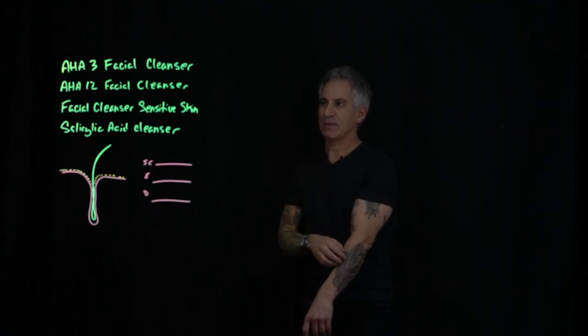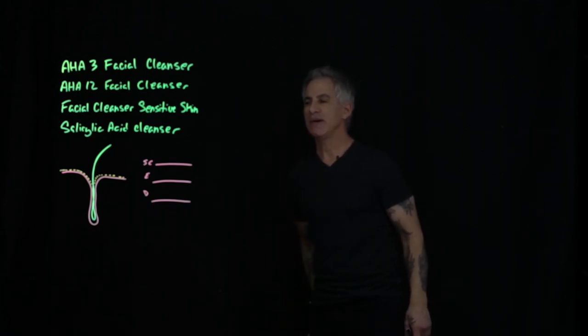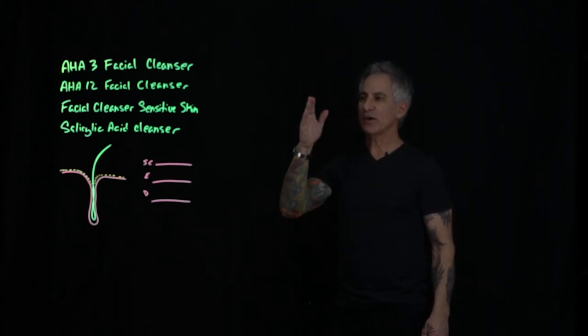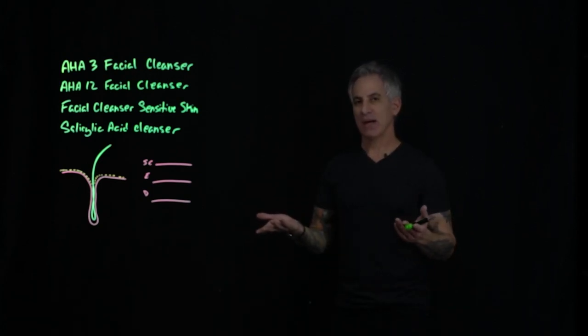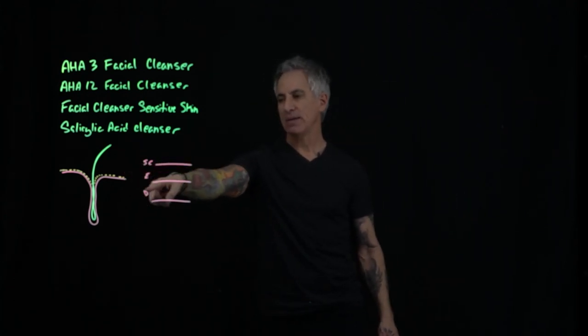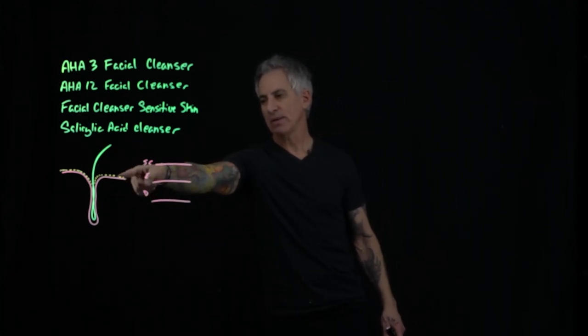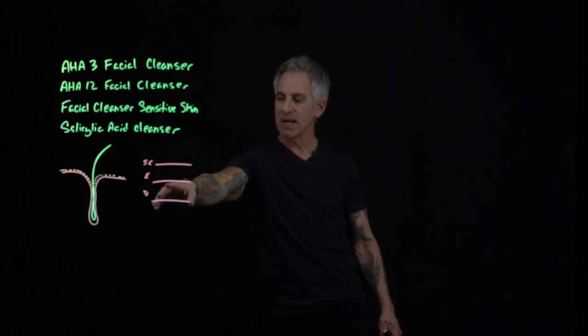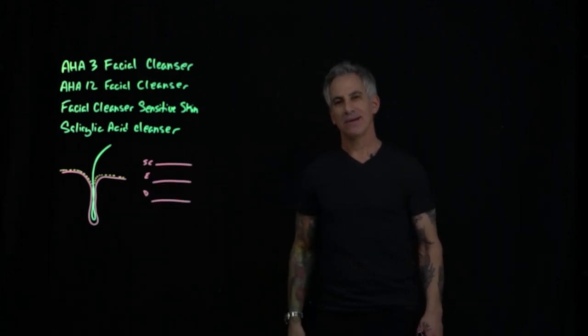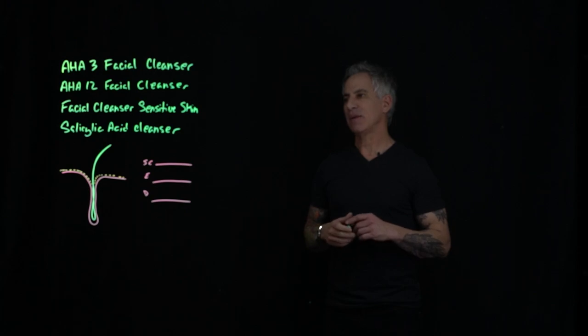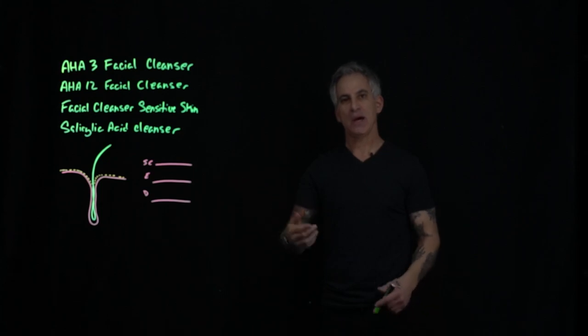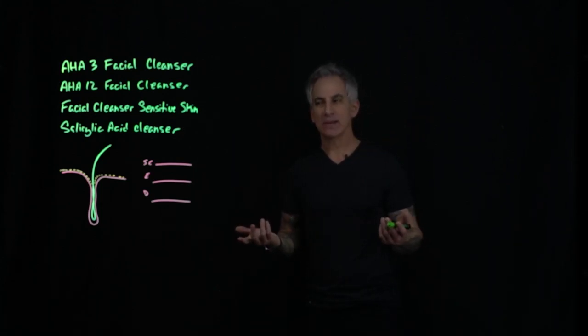They are the AHA-3 facial cleanser, AHA-12 facial cleanser, facial cleanser sensitive skin, and salicylic acid cleanser. I'm going to go over each one and I'm going to talk about the Fitzpatrick scale, make this really simple. And I'm going to talk about the hair follicle and the stratum corneum. And this is the three layers of the skin, which is the stratum corneum (SC), the epidermis, and the dermis. So let's get started right away and talk about what's most important when looking at any cleanser, and especially those within the Skin Care Science brand line, Serene.